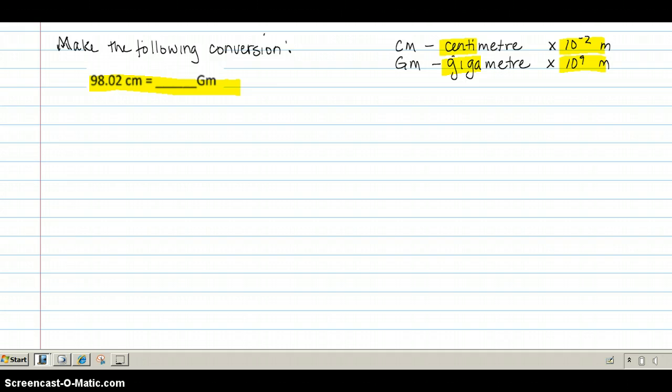So to make the conversion, the first thing you need to do is make yourself a conversion factor. The conversion factor I'm going to make is how cm relate to gigameters. In doing so, I'm going to compare them both to meters.